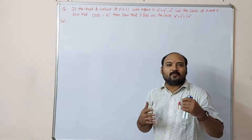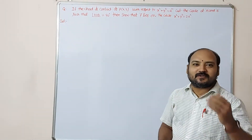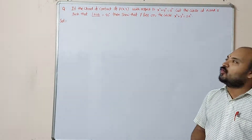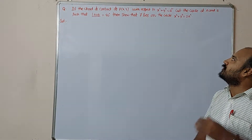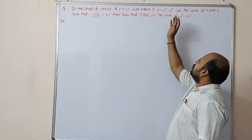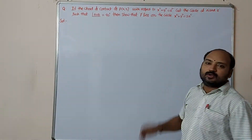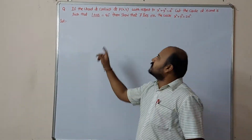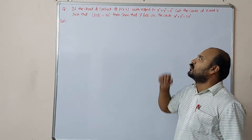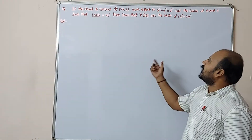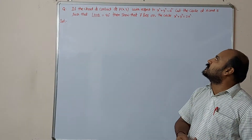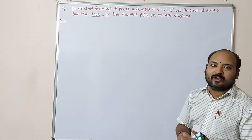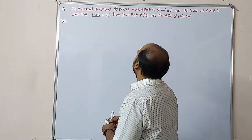This is an important question from the circles chapter. If the chord of contact of point P(x₁, y₁) with respect to x² + y² = a² cuts the circle at A and B such that angle AOB equals 90 degrees, then show that P lies on the circle x² + y² = 2a².